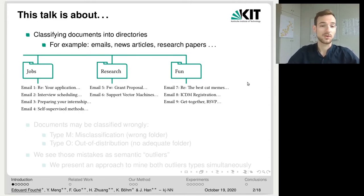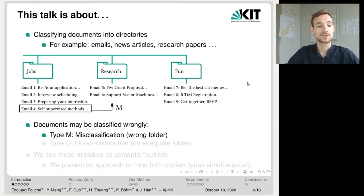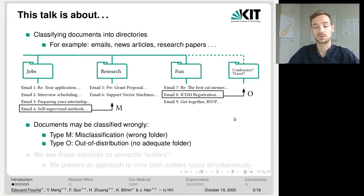But such documents may also be classified wrongly in two specific ways. The first way, type M, misclassification. A document was put in a wrong folder and should be put in another folder in the taxonomy instead. And the second type, type O, out of distribution. A document was put in a wrong folder but there exists no adequate folder in the current taxonomy, so the user should create one.